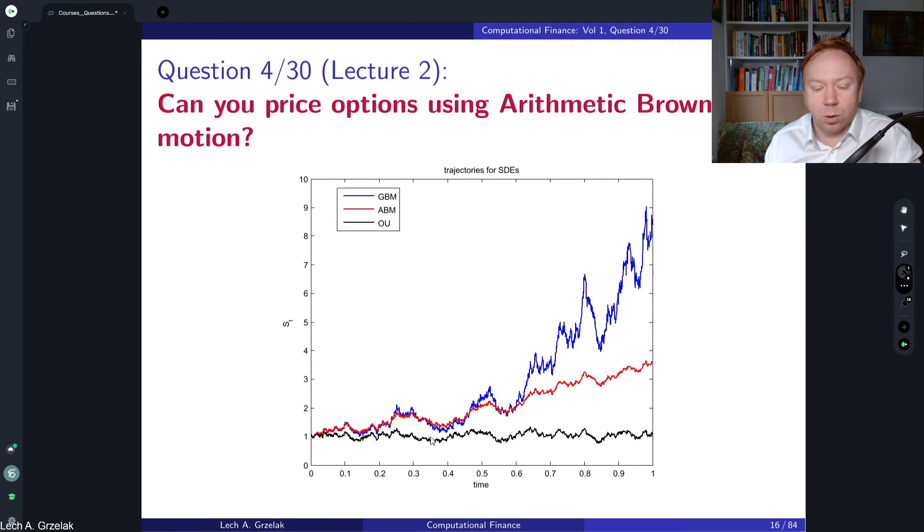And then we have also the Ornstein-Uhlenbeck process here. In this particular case we don't see arithmetic Brownian motion paths become negative, however if we would simulate more paths this obviously would be the case. Also it's important to note that in those three simulations I have used the same Brownian motion, so you can see the same shapes, patterns of the simulated paths.